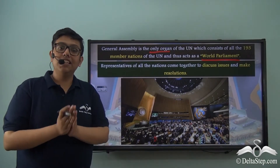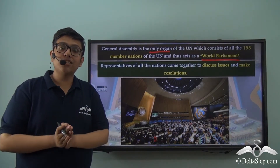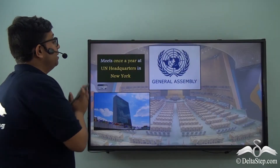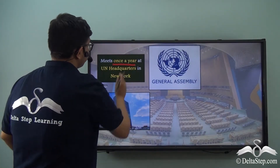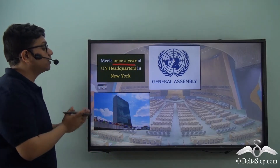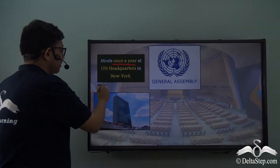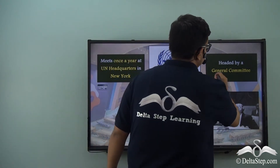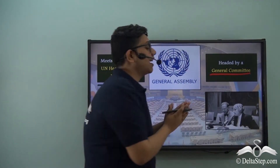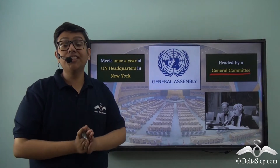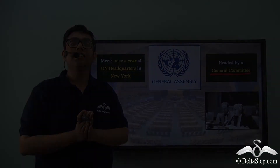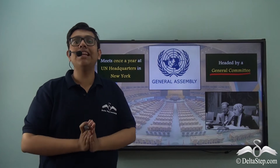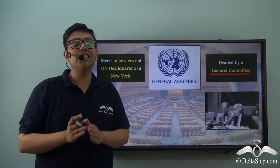Over here we see a glimpse of a session of the General Assembly. The General Assembly meets once a year at the UN headquarters in New York. The General Assembly is headed by a General Committee which acts as the administrative wing, comprised of the President, the Vice Presidents, and various other chairpersons of the General Assembly.